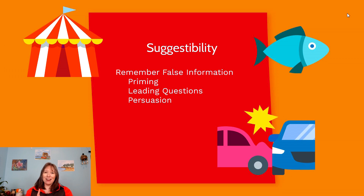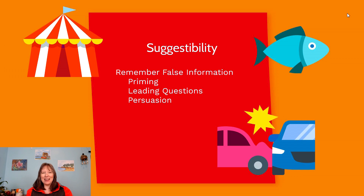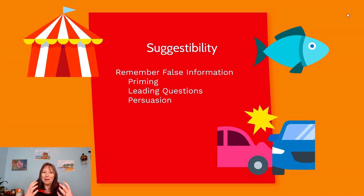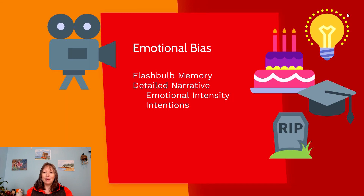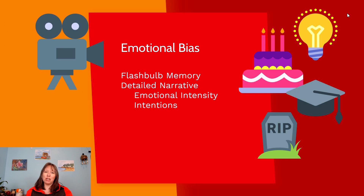When you remember an event from the past, you're not actually remembering the original event — you're only remembering the last time you accessed it. So every time you recall the fabricated circus memory, you add more details and change it slightly. This is why two people who experienced the same event will remember it more and more differently over time, because each time they recall it, it changes a little bit more.